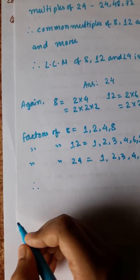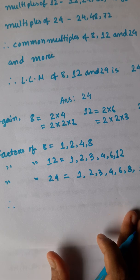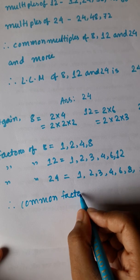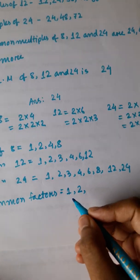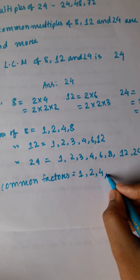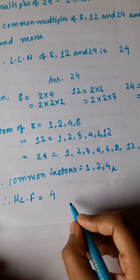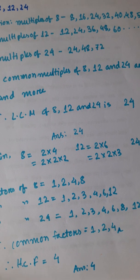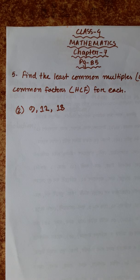So, common factors of 8, 12, and 24 are 1, 2, 4. The HCF of 8, 12, and 24 is 4.